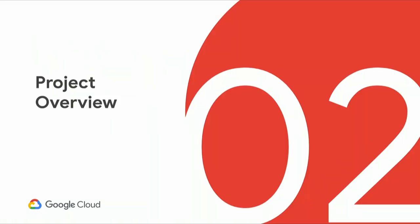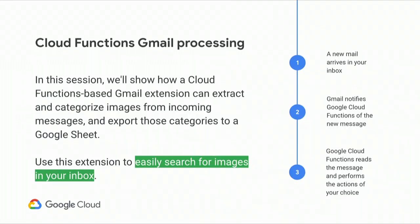Today we're going to focus particularly on that first use case. When it comes to Gmail processing, what we're going to do is take all of our incoming messages, and anything that has an image, we want to find that image, extract that image, classify it using the Cloud Vision API, and export those classifiers to Google Sheets. We can use this to easily search for images in our inbox.